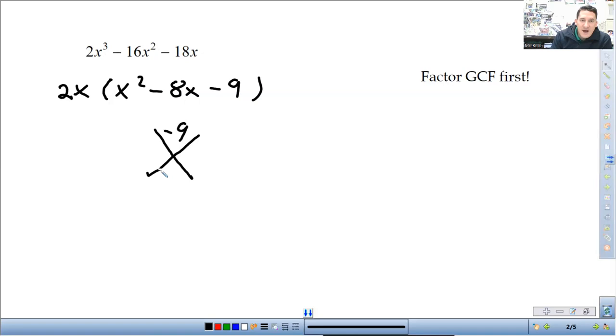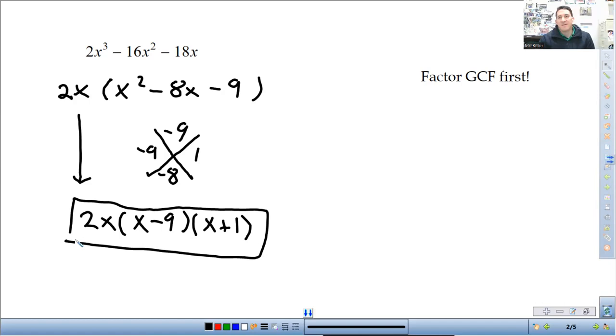We split up this quantity into 2x times x squared minus 8x minus 9. And then, from here, we're going to finish factoring what's in the parentheses using an x-factor. So, negative 9 on top, negative 8 on bottom. Factor negative 9, add to negative 8. That's going to be a negative 9 positive 1. And then, I can put those in parentheses. x minus 9, x plus 1. Don't forget to bring down the 2x from that first layer of factoring. And there we go.